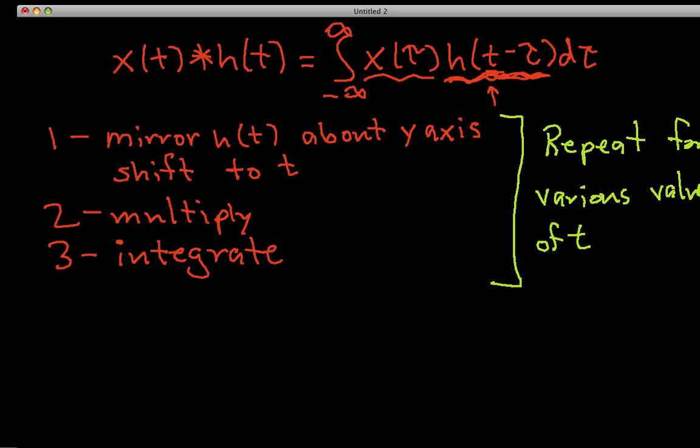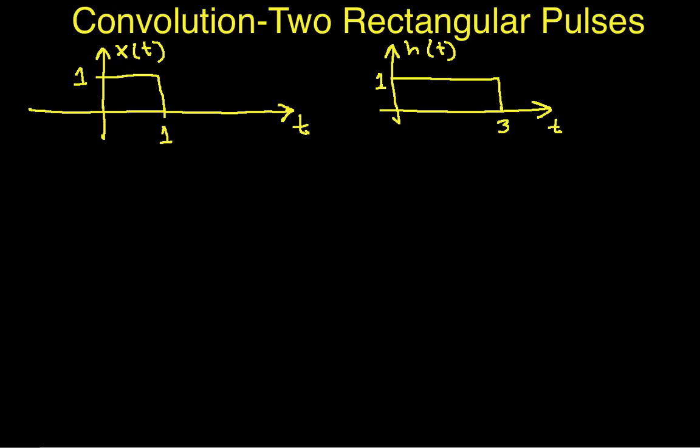So the idea here is in principle you could do this for every possible value of t and then you'd know for sure what the answer should be. In practice, what you do is you look for the values of t that are going to change the basic structure of your integral.